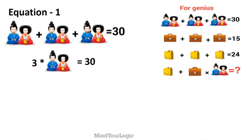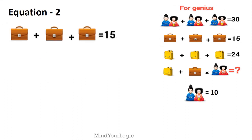Equation 1 is simple. We have 3 couples that equal 30, so 1 couple equals 10. In equation 2, we have 3 brown bags equal to 15, so 1 brown bag equals 5.